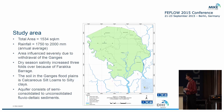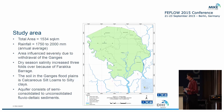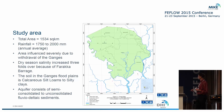The area is severely influenced by the withdrawal of the Ganges, which flows through this region — the entire model is part of the Ganges delta. Dry season salinity has increased very significantly. The soil is typical floodplain soil of the Ganges floodplain, and the aquifer mainly consists of semi- and unconsolidated fluvio-deltaic elements.